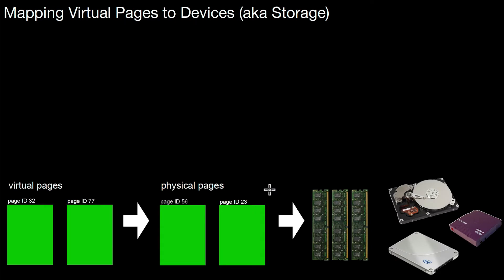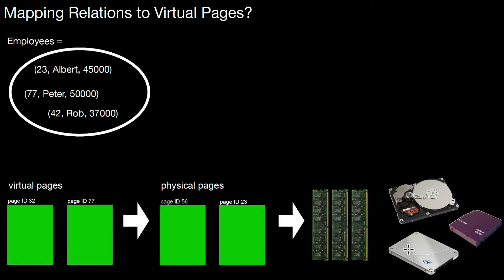We learned about how to map those virtual pages from virtual memory management to physical pages, and eventually those physical pages are mapped down to devices, be it DRAM, hard disks, flash, or whatever. But now in the following, we have to learn how to map actual relations to those virtual pages. Relations is what we want to store, what we want to handle on the database system eventually.